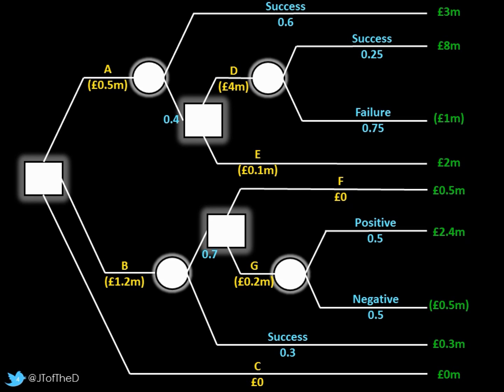In green text, on the far right-hand side, you then have the value of what that outcome would be. So right at the top, coming from node A, success 0.6 probability is the equivalent of 3 million pounds. That's what that success would actually be. So 60% chance, if you like, of getting 3 million.